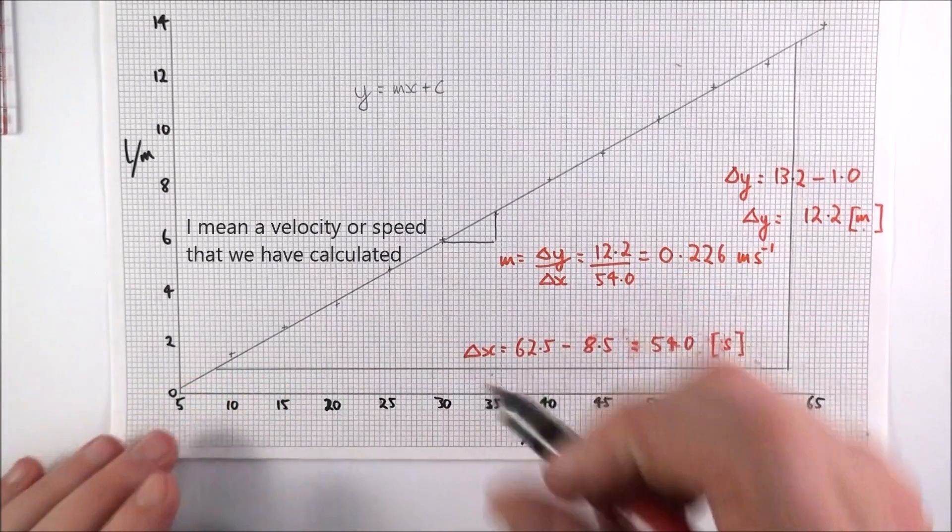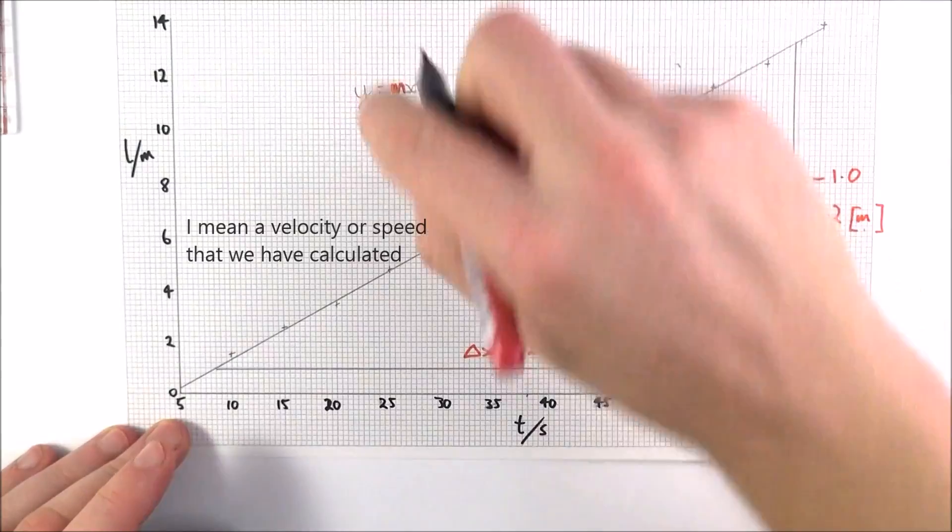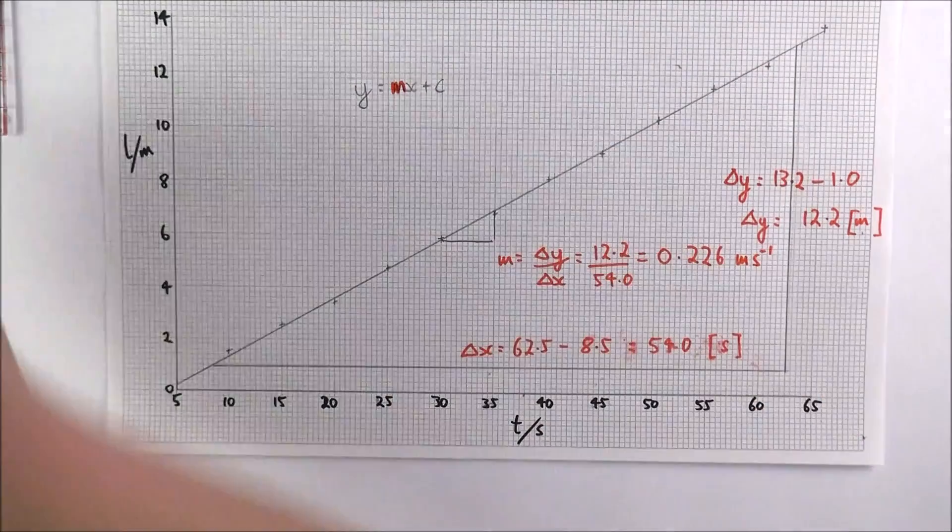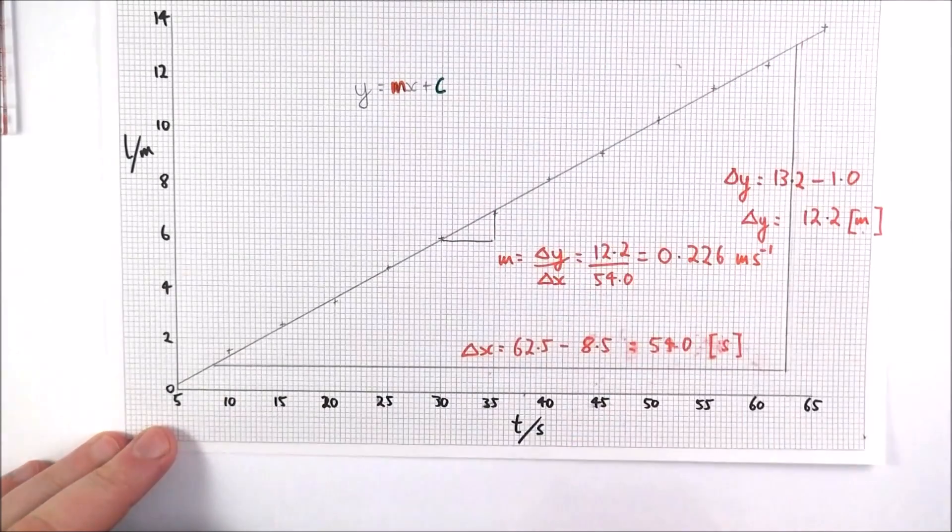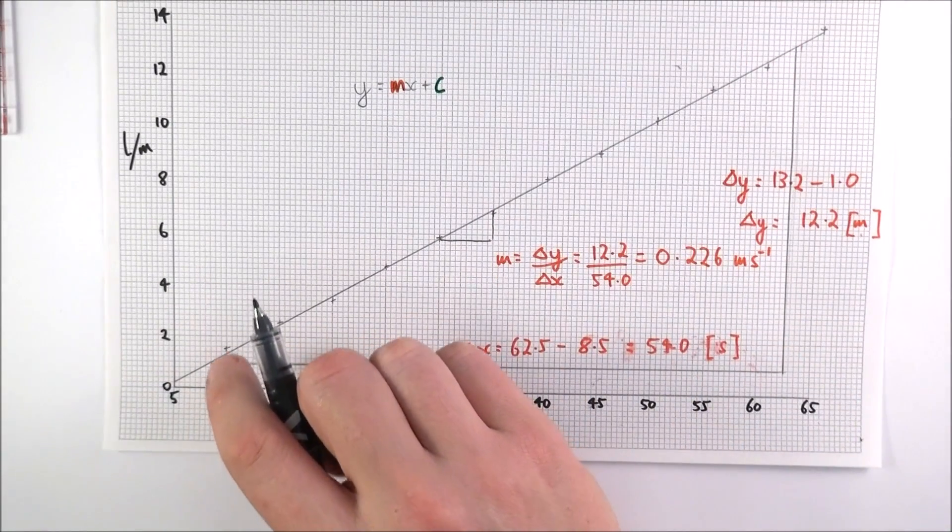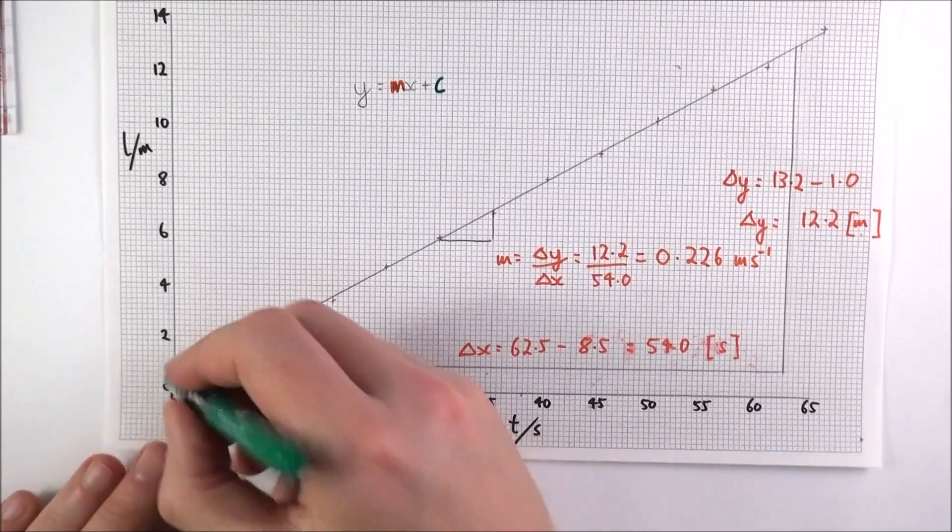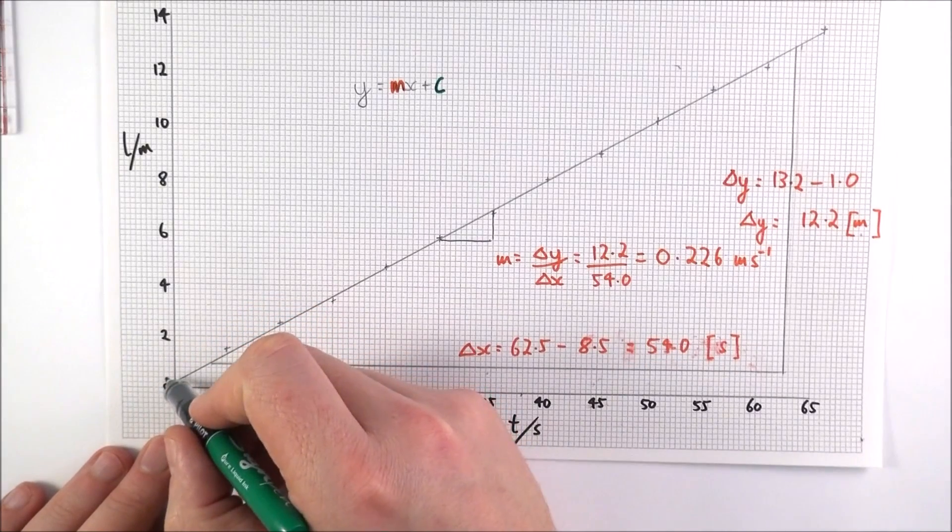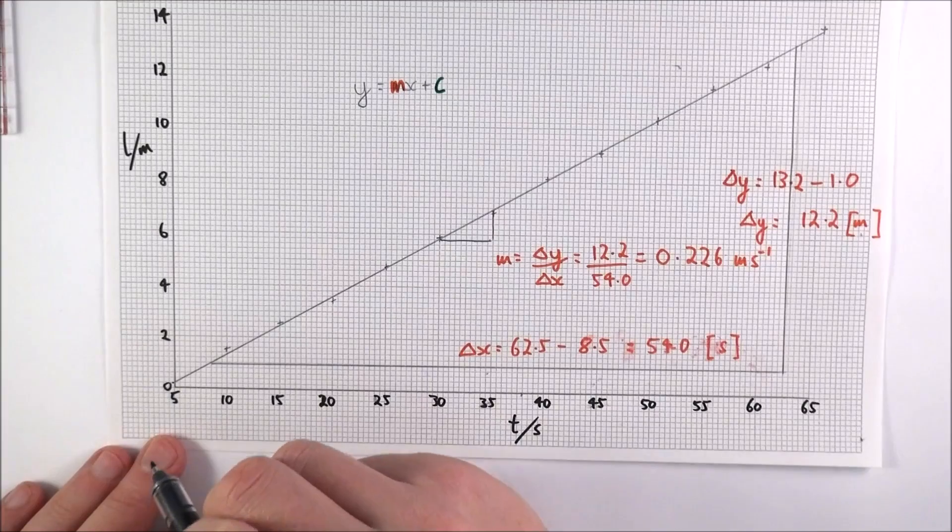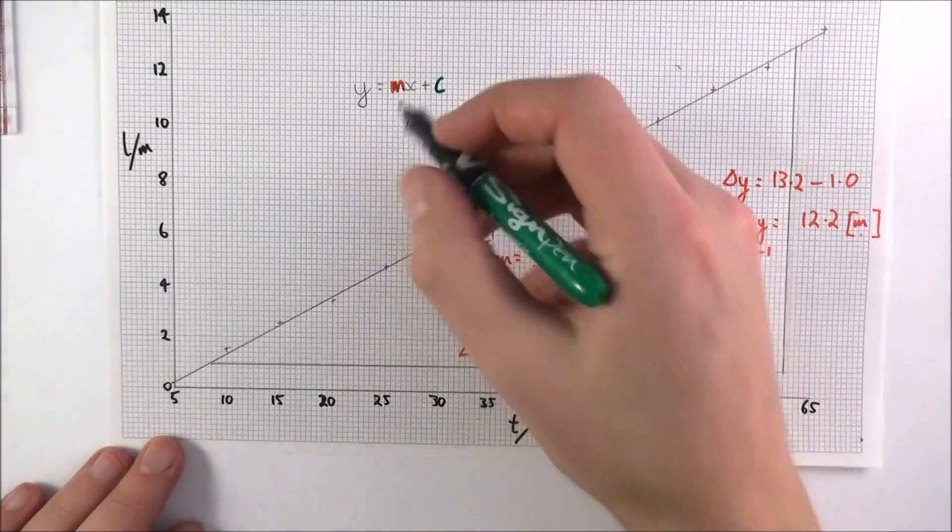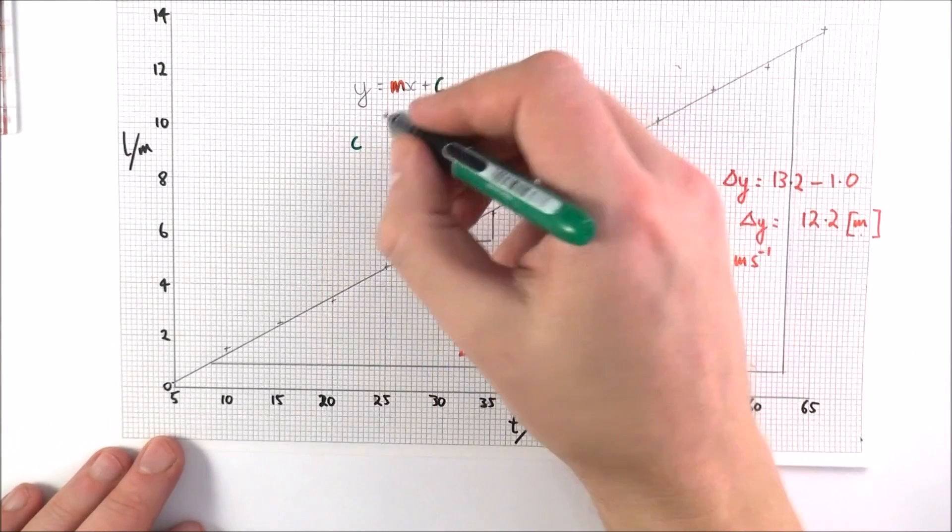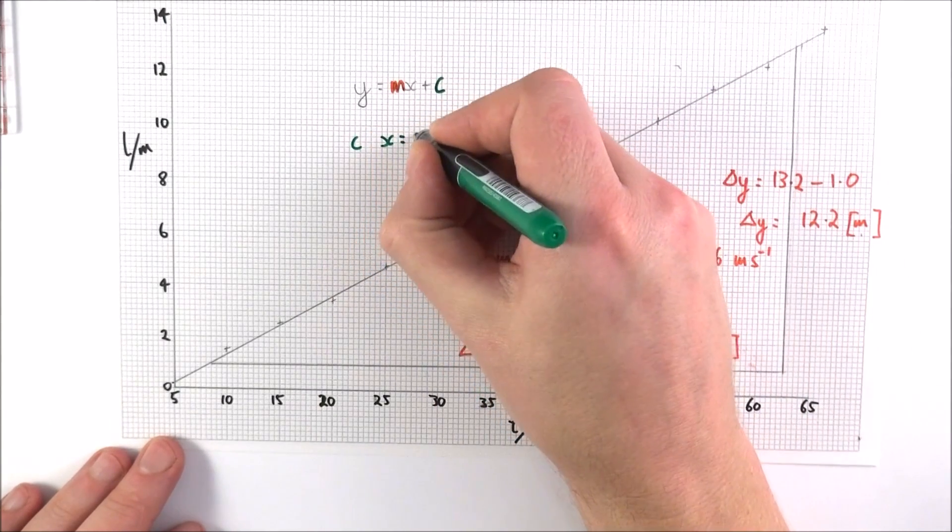What about the y-intercept? So we've basically worked out our value of m up here. What I'd like to do next is find the y-intercept, which is c. Now a lot of the time we can just read this off the axis, but not in this case. This value down here, which is about 0.2, is not equal to the y-intercept. It's just where this line goes to the y-axis, but the value for the y-intercept c is when x is equal to zero.